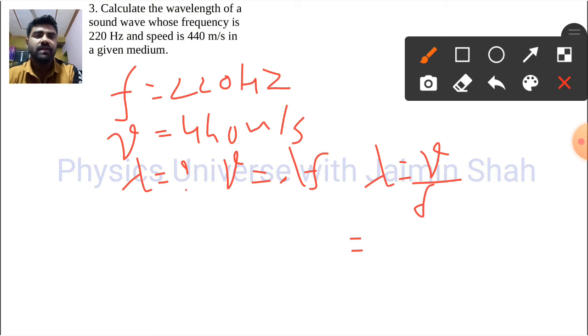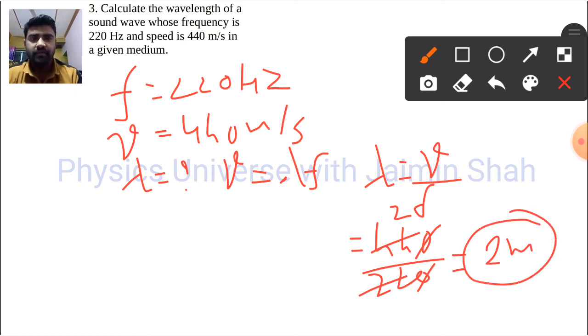Now what is v? v is 440, f that is 220, so 22's are 444, so 2 meter is the wavelength of our wave.